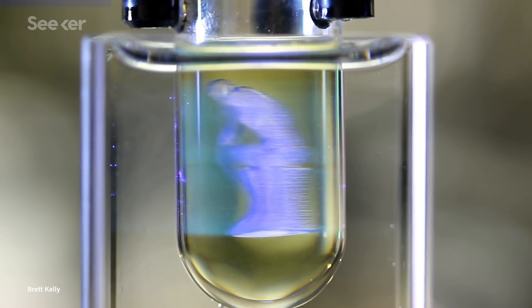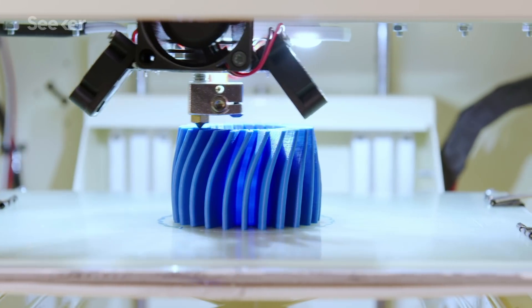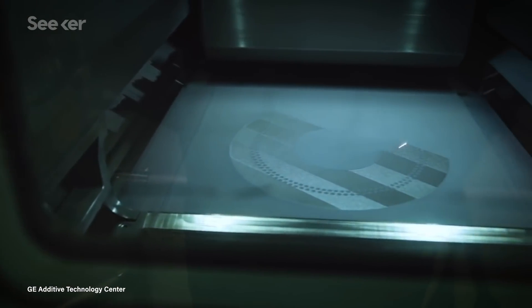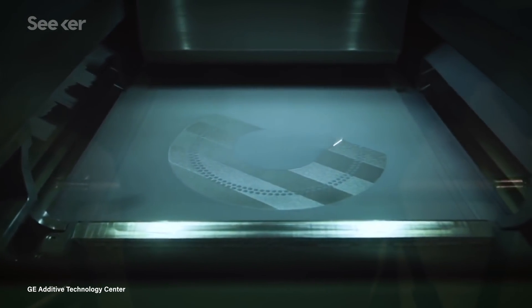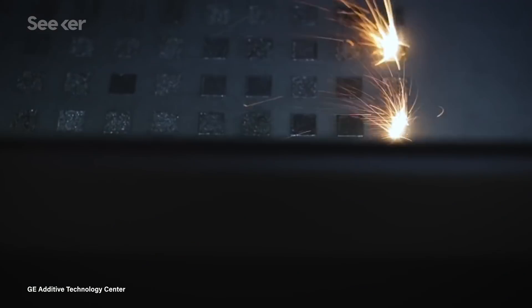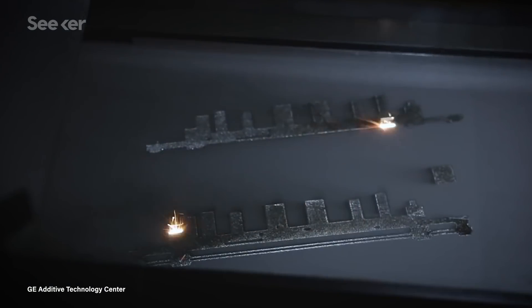But this isn't the desktop 3D printing you're used to seeing us cover here at Seeker. This is a different type of additive manufacturing, where an entire assembly line can be built around machines that use powerful lasers to create industrial parts.